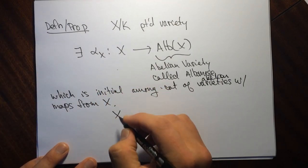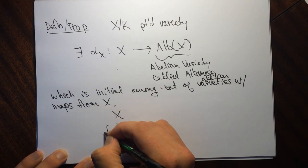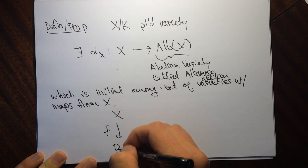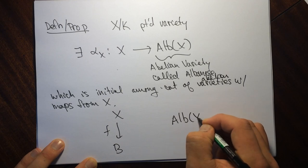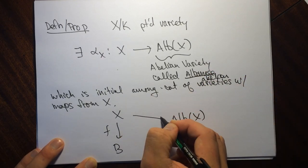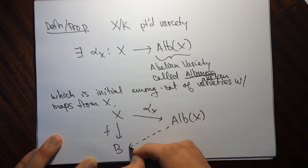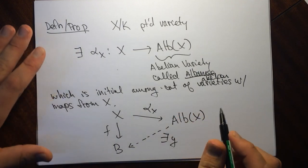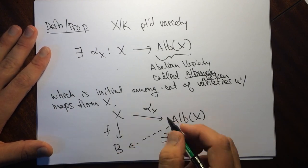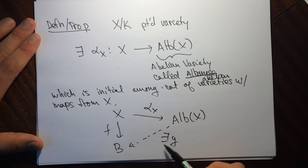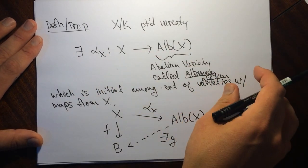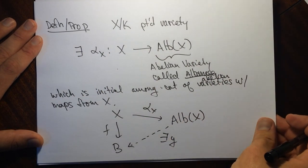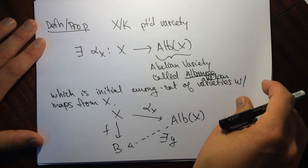What does 'initial' mean? It means that if we are given a morphism from X to some abelian variety, we also have this map to the Albanese. And there exists a map from the Albanese to that abelian variety such that the diagram commutes. So for all f, there exists a g making this commute. That is what the Albanese is, and we're going to use this idea in our construction.